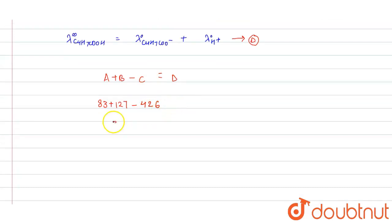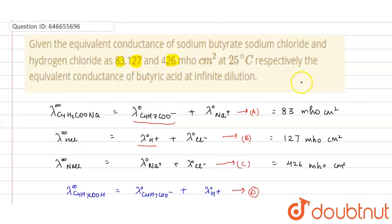From here we will get a value. I did a mistake here - sodium butyrate value is 83 and sodium chloride value is 127. So here it is 127 and here it is 426.